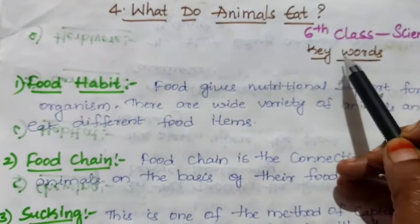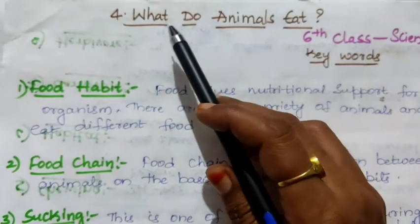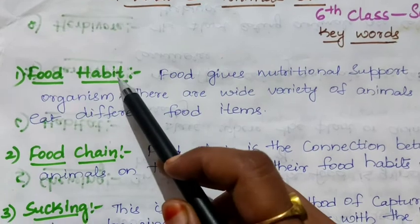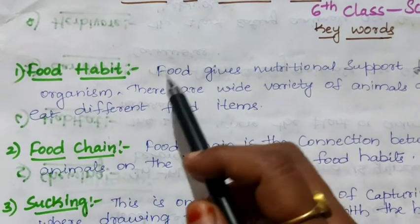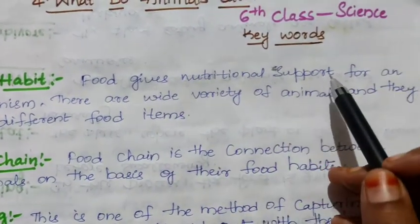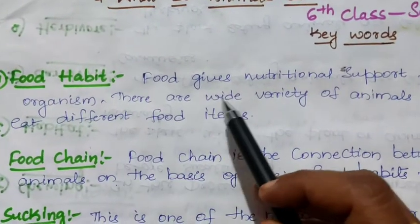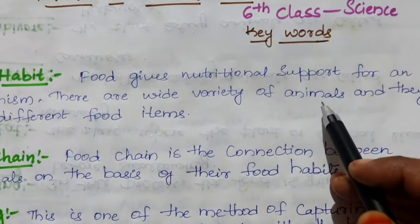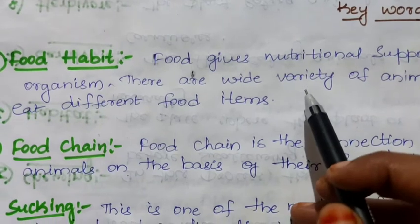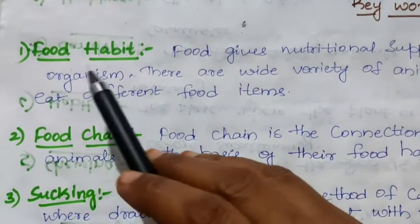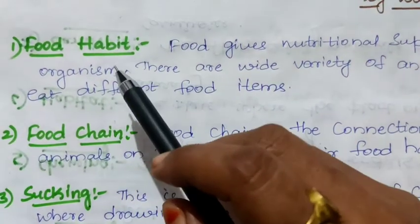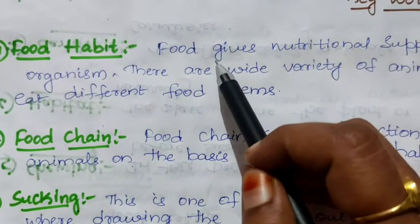Hello students, we will discuss the keywords for the lesson 'What Do Animals Eat.' Look at the first keyword: food habit. Different animals have different food habits. Food gives nutritional support for an organism. There are a wide variety of animals and they eat different food items. Next keyword: food chain.